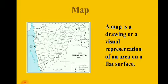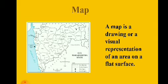Map. Children, a map is a drawing or a visual representation of an area on a flat surface. Maps help to reach from one place to another. Maps show all the details of an area on paper. A map can represent large or small areas too. Maps use symbols or simple pictures to represent real things like parks, buildings, rivers, mountains, sea, etc.